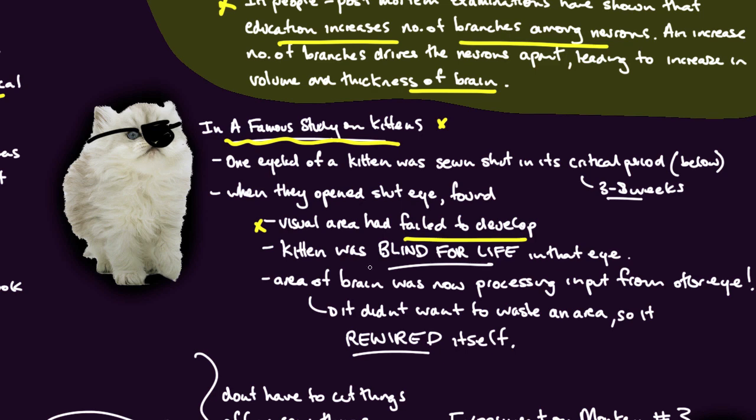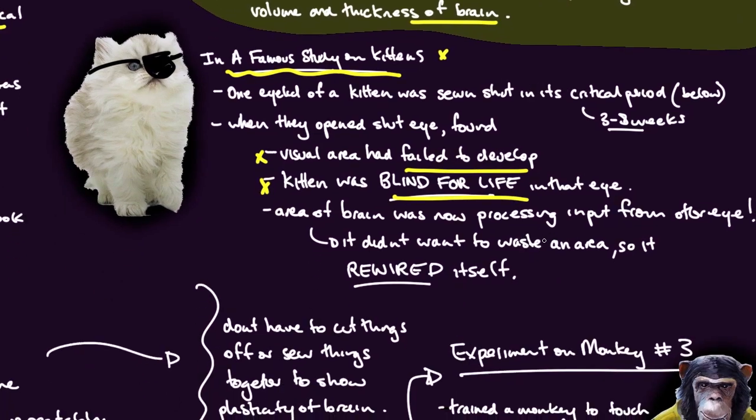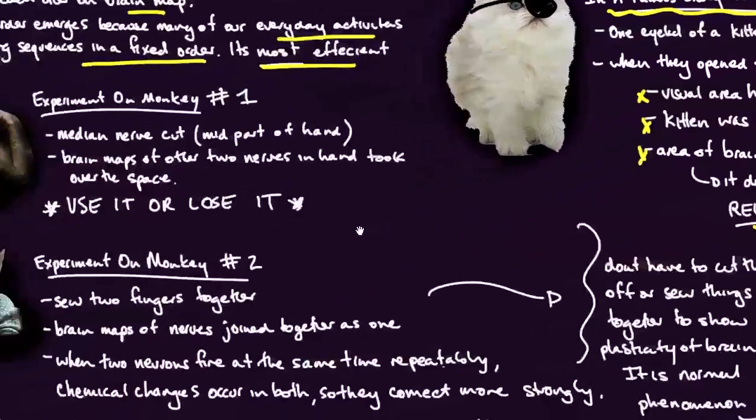The eye didn't get any input, so it didn't develop at all. But the kitten was actually blind for life in that eye - a little surprising. The brain now has no way of processing information from that eye, so you're blind for life. And the area of the brain that was originally assigned to, say, the left eye, was now working for the other eye. The brain rewired itself - it didn't want to waste any area.